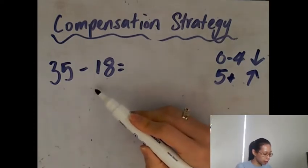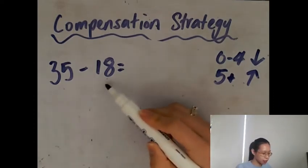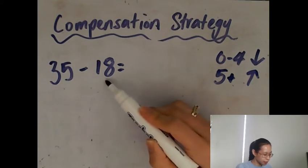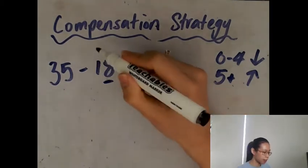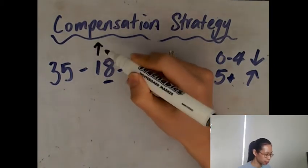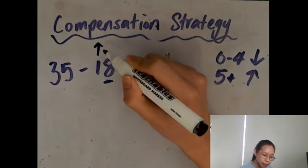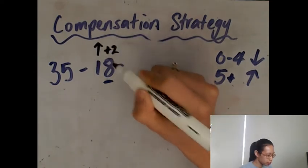Let's have a look at this 35 minus 18. You have a look at 18 and the 8. Because it's an 8 and it's above five, then you round up. So I'm going to do a little up arrow and then you round it up by two.